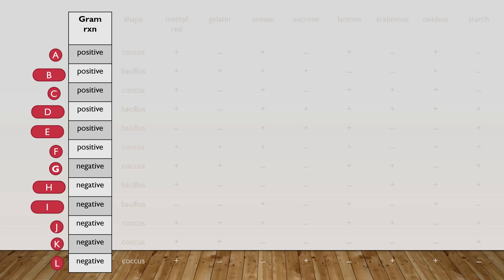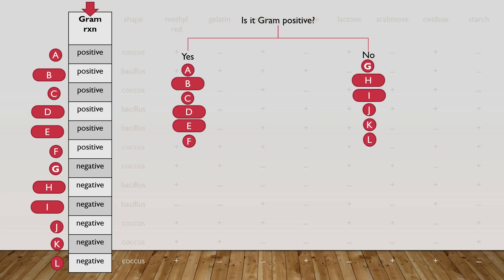Okay, so let's begin separating 12 bacteria listed here as A through L based on their gram reaction. I'm going to ask the question, is my bacteria gram positive? Yes or no? Now notice I could also ask, is it gram negative? And I get the same result. So just by asking this question, I've separated the 12 bacteria into two smaller groups of six gram positive bacteria and six gram negative bacteria.